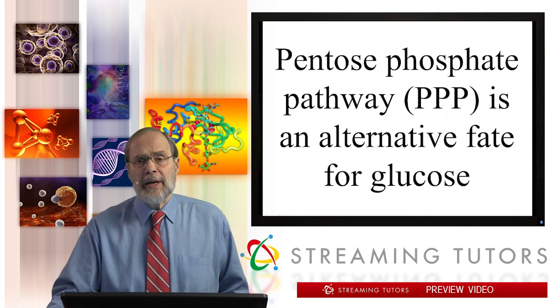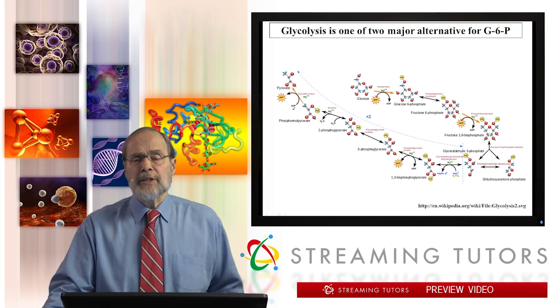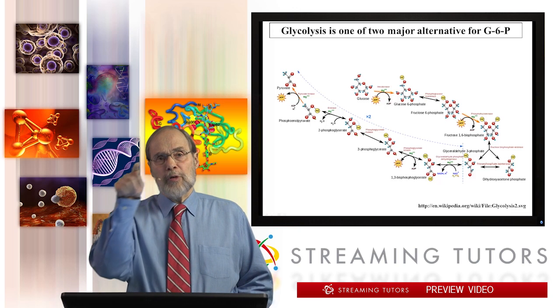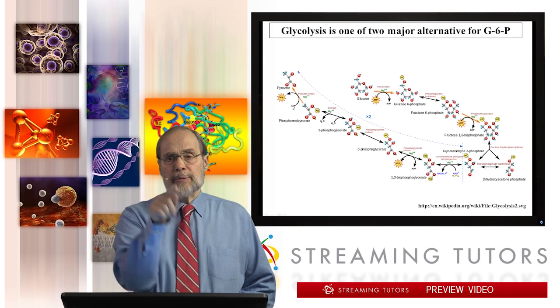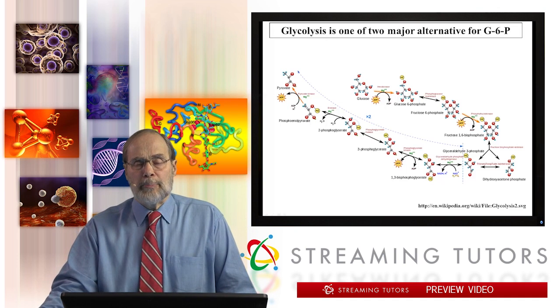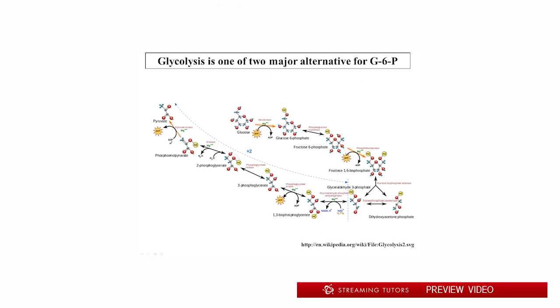So it's an alternative fate for glucose. This is a different view of glycolysis than you're used to. Glucose is near the center, top center, and then proceeding rightward and looping back around leftward is the complete glycolysis all the way to pyruvate. Let me call your attention to the fact that the second intermediate is glucose 6-phosphate, and that in turn is turned into fructose 6-phosphate as glycolysis proceeds. This of course should be very familiar to you by now.